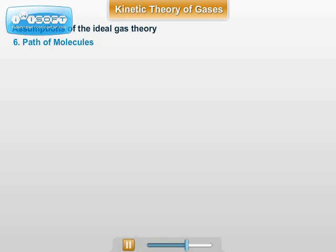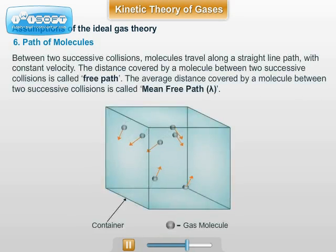Then, path of molecules. Between two successive collisions, molecules travel along a straight line path with constant velocity. The distance covered by the molecules between two successive collisions is called free path. The average distance covered by a molecule between two successive collisions is called mean free path, denoted by lambda.